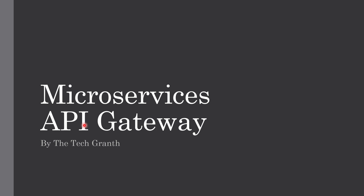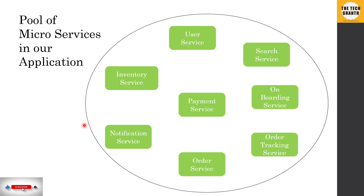Hello friends, welcome to the Tech Grant. We'll continue our journey into microservices, and today we'll talk about API gateways — why they are used, what the use case is, and why they came into the picture. We'll continue with our example of the Amazon backend architecture, where we are dealing with a pool of microservices: inventory service, user service, payment service, notification service, and others.